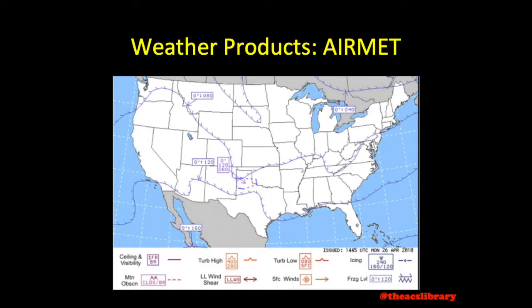Graphical airmets provide snapshots of weather conditions displayed at short intervals, used to aid pilots in decision-making prior to or during flight. Graphical airmets provide more precise and informative weather hazard depiction than textual airmets.